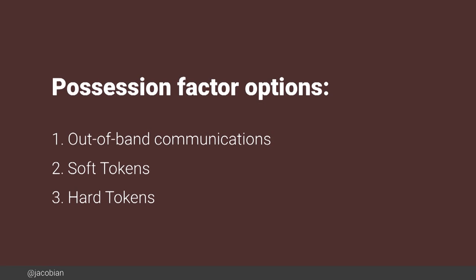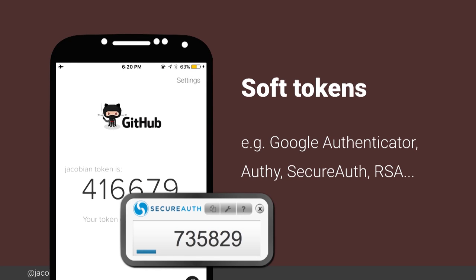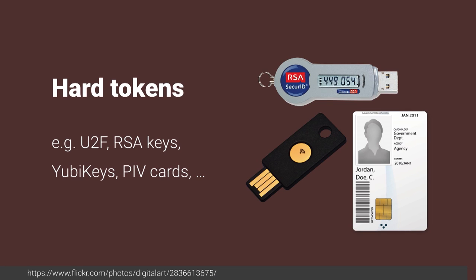Let's talk about possession factors. I think they break down into three broad categories. There's out-of-band communication — text messages, emails, phone calls. The idea is when the user tries to log in, you communicate back via some pre-saved mechanism like SMS. There are soft tokens — you may be familiar with this from Google Authenticator or GitHub's two-factor auth or Dropbox. This is probably the most common implementation for public-facing web apps. Finally, there are hard tokens — actual physical devices like an RSA token, a YubiKey, or a smart card.